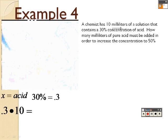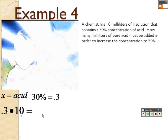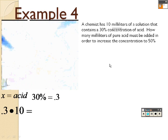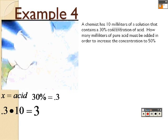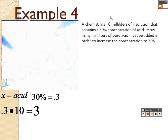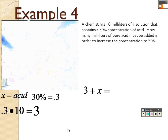So 30% of it times 10 must be added to it. So 30% times 10 is 3. So 3 of the 10 milliliters is acid. That's what we're trying to figure out here.